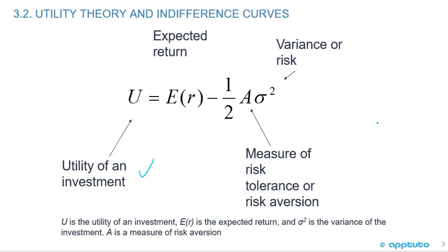Utility Theory and Indifference Curves – Here we have a formula: the utility of an investment U equals the expected return minus one-half, a measure of risk tolerance or risk aversion, times the variance or risk.